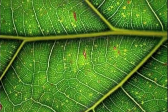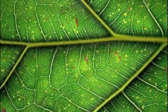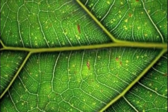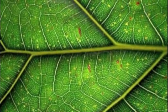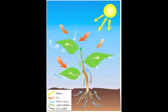During the day, the leaves are responsible for taking in carbon dioxide gas from the air and also taking in sunlight. Water is brought up the roots of the plants and transported into the leaves of the plants through special pipes called xylem.